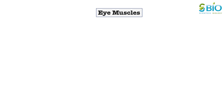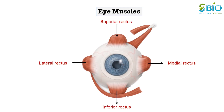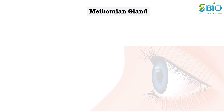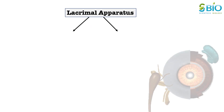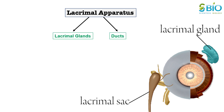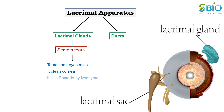Each eyeball contains 4 rectus, 2 oblique and 1 levator muscles. The secretions of Meibomian glands help in frictionless blinking. The lacrimal apparatus of an eye consists of a lacrimal gland and various ducts. The lacrimal gland secretes an alkaline watery fluid called tears. Tears keep the eye moist, clean the cornea, and also kill bacteria as they contain lysozyme.